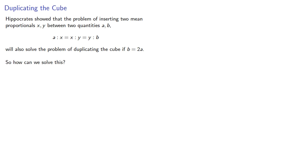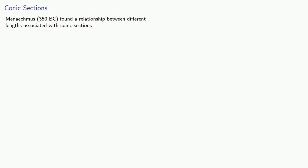So how can we solve this? One solution came from Menaechmus who lived around 350 BC. He found a relationship between different lengths associated with conic sections.